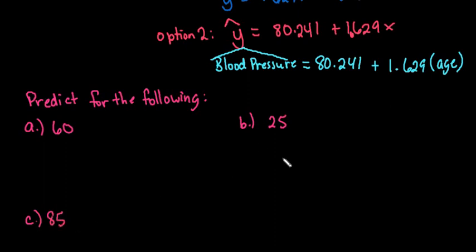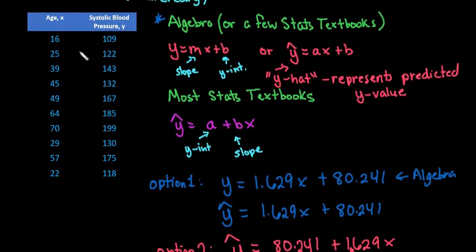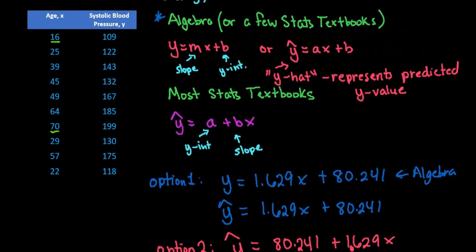Now the first thing that you want to do before you make a prediction is you want to look at your X variables to make sure that these are in the range of your known data set. So 60, 25, and 85. If we go back up here, notice that our lowest one is 16. Our highest is 70. So we really only want to predict for things within those values or very close to those. So if you have any values that fall outside of your range, be careful about making predictions because that's called extrapolation. And a lot of times, extrapolation can get you into trouble.